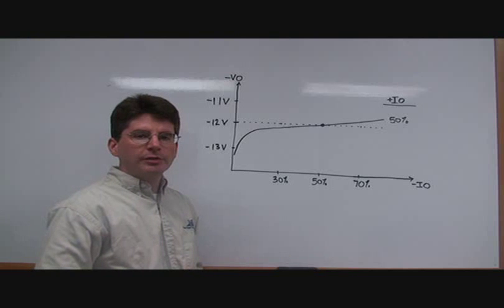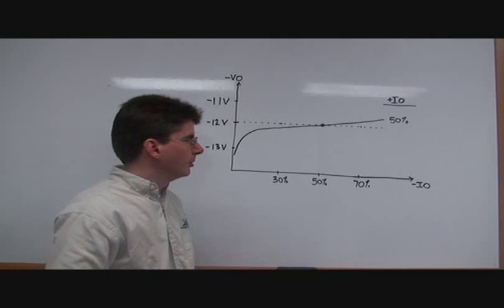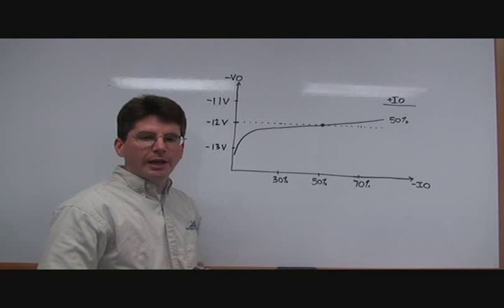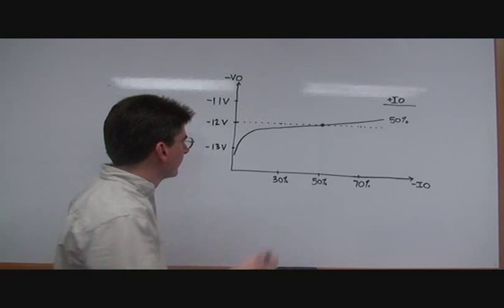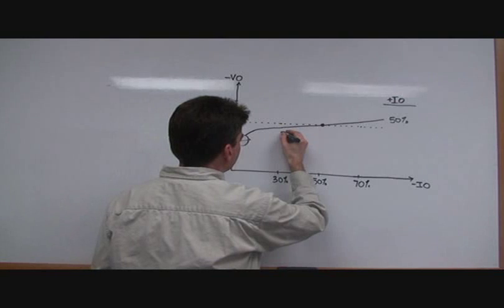In the data sheet, we specify a cross regulation number. That number is taken at 30%, 70% condition. That is shown here.